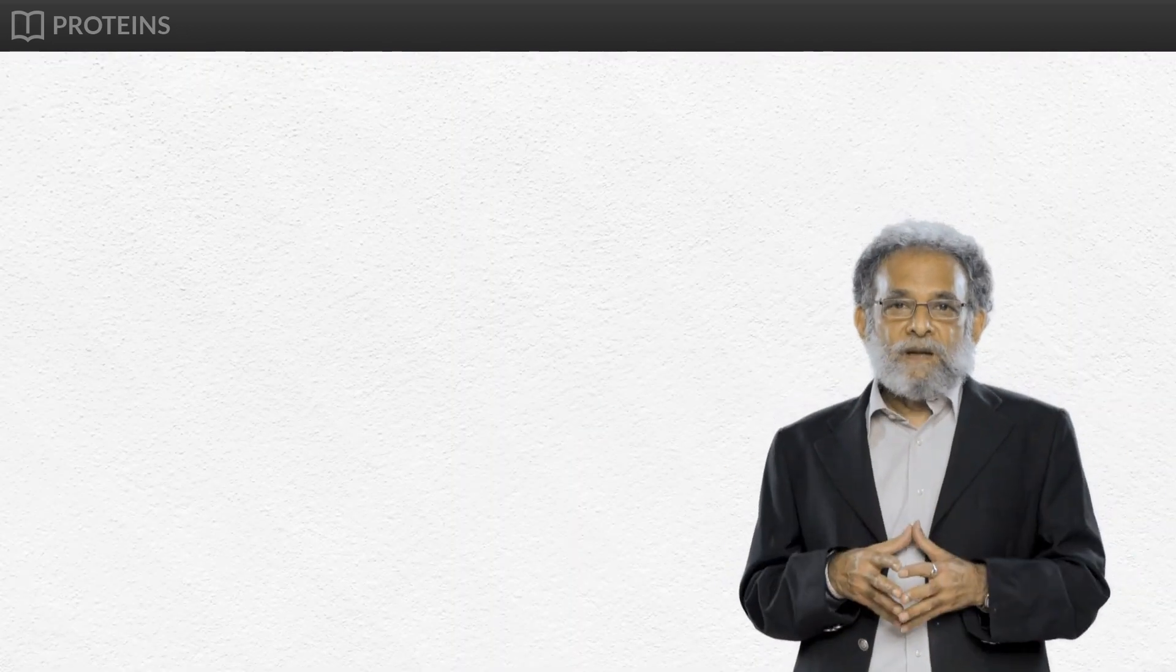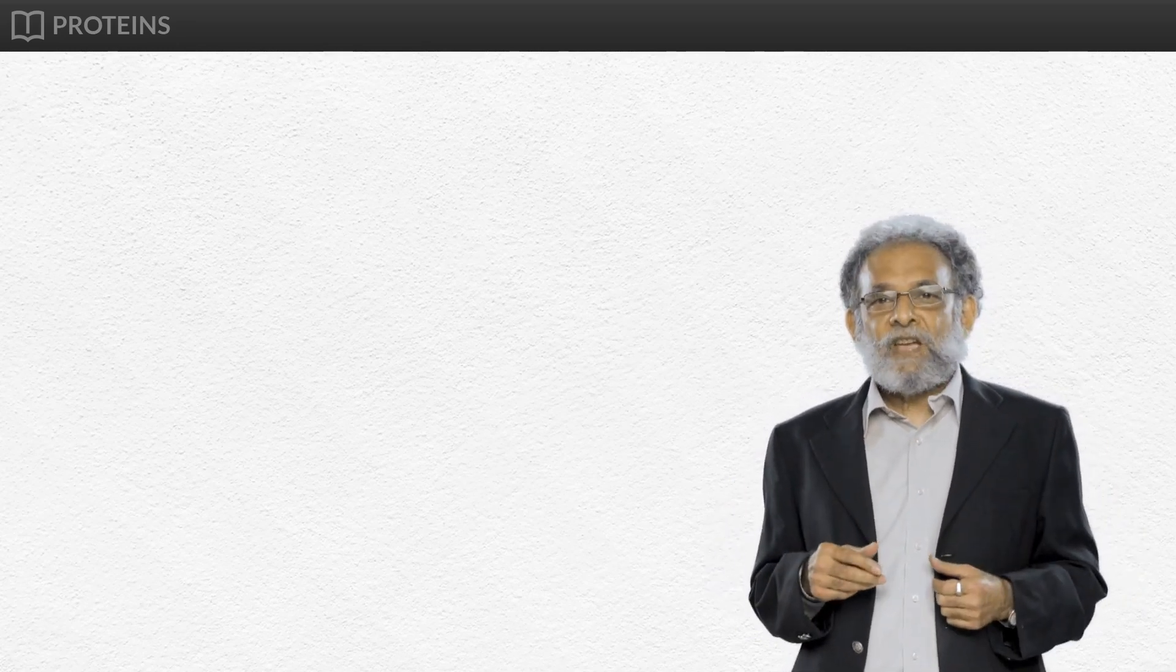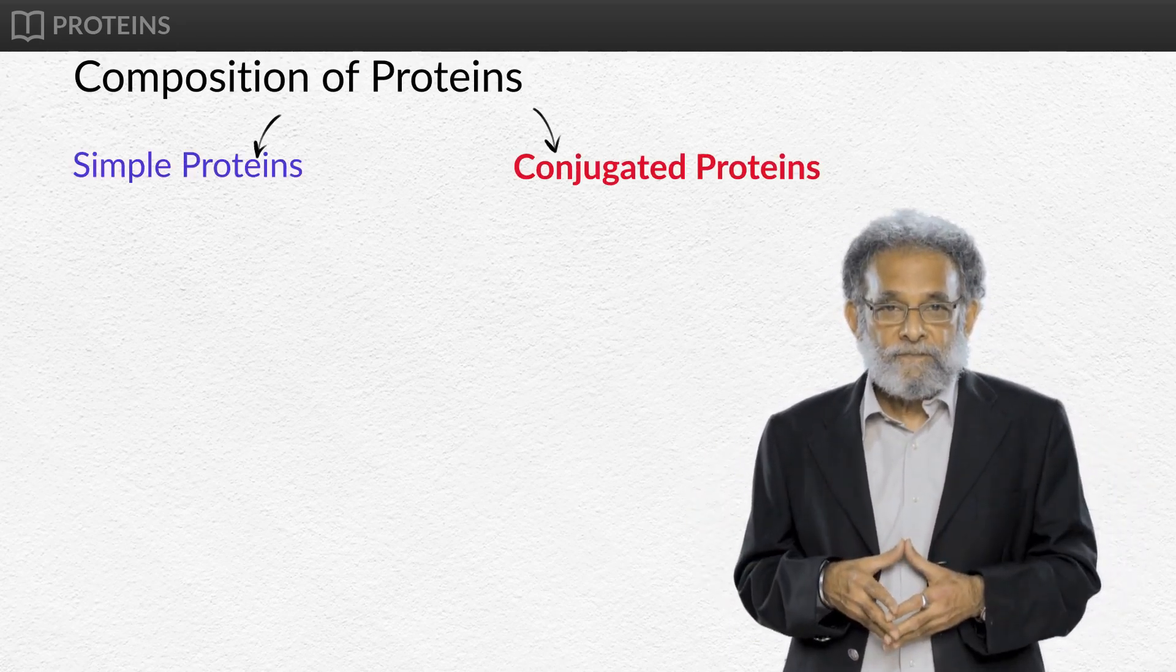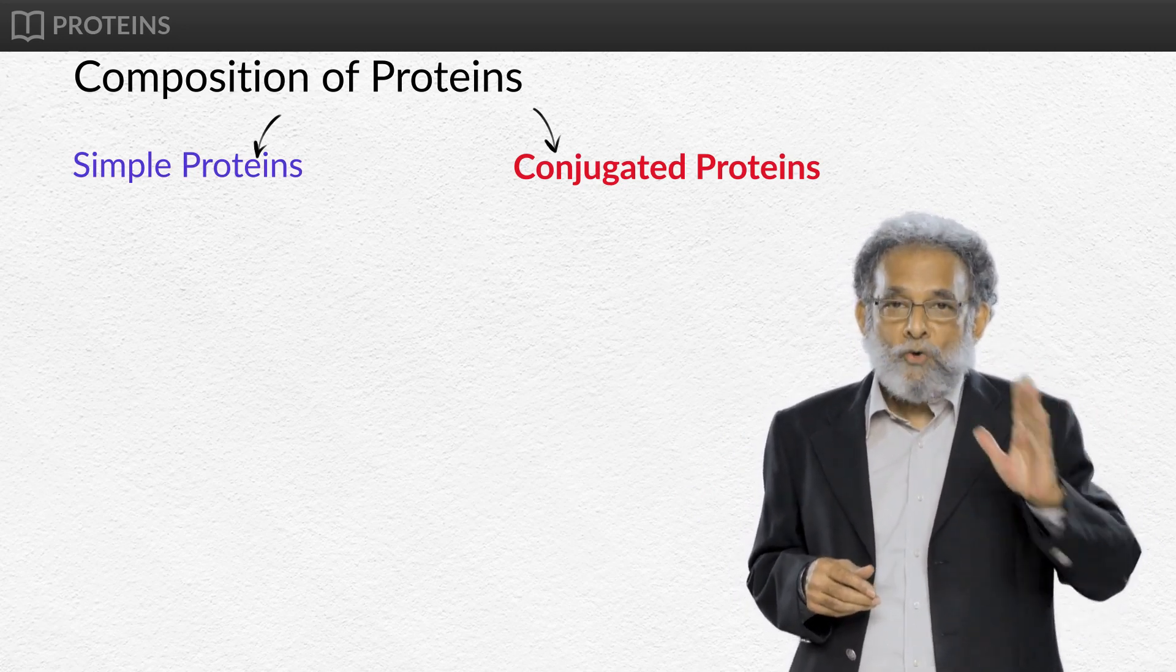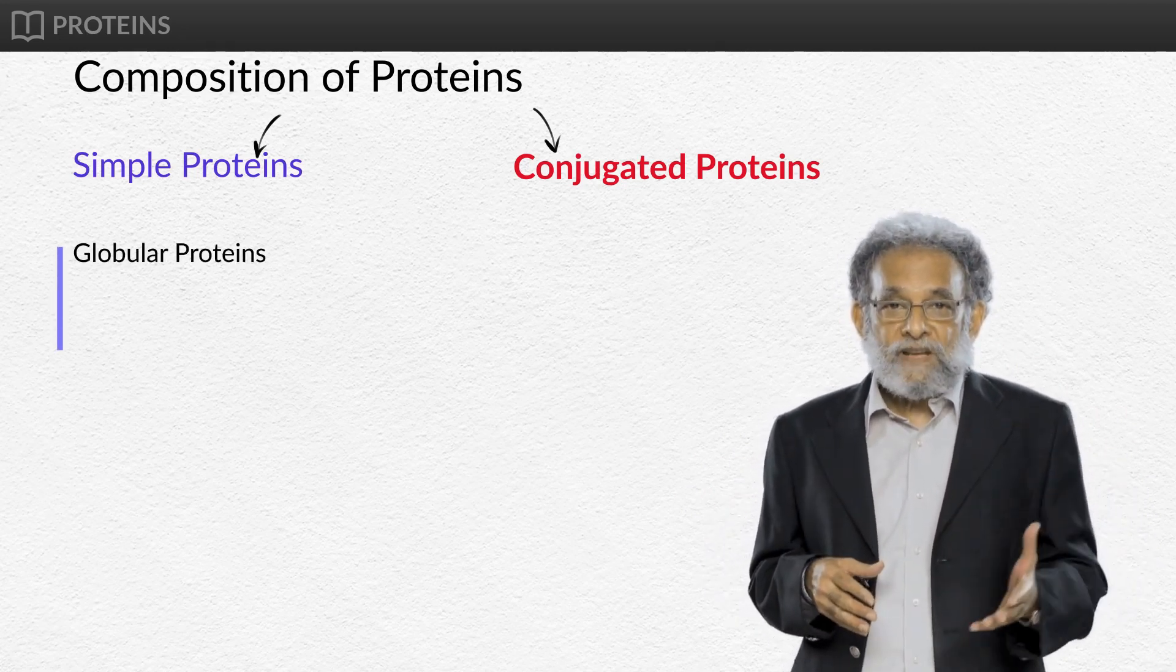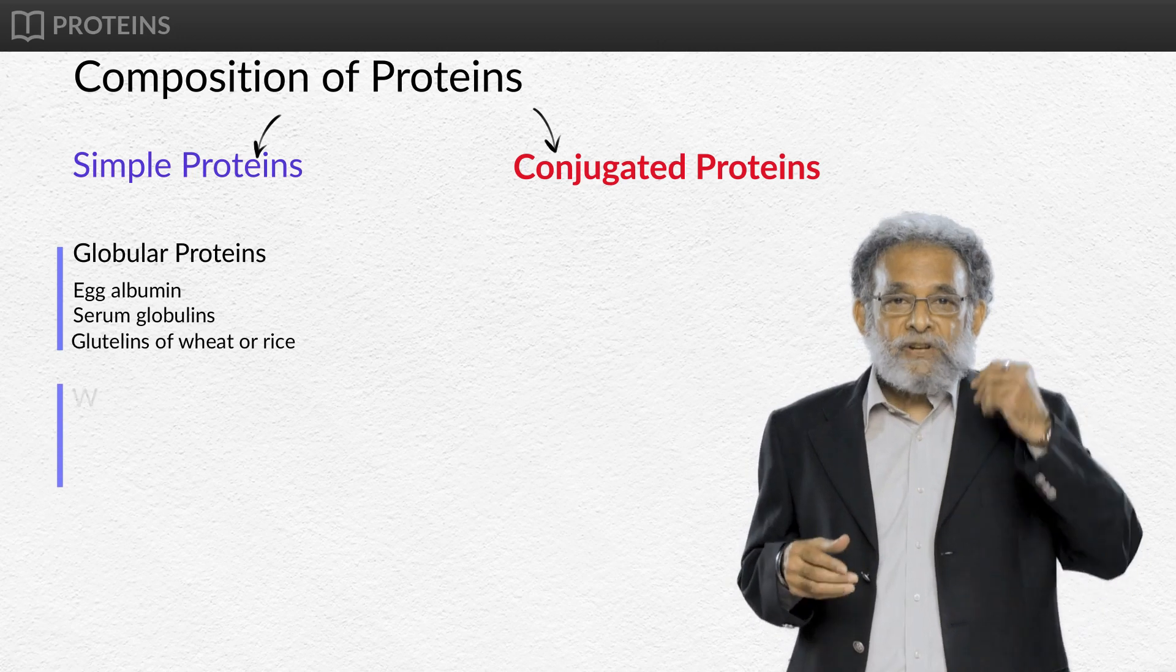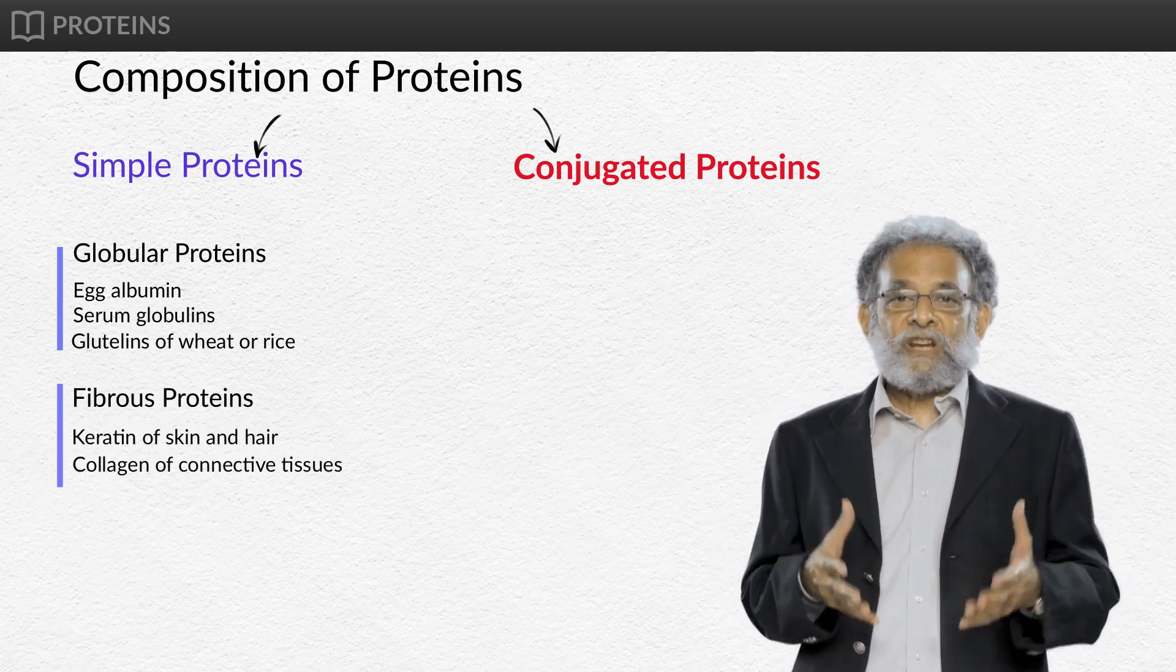By now we have learned about the function and structure of proteins. Let's see the classification of proteins based on their composition into simple and conjugated proteins. Firstly, simple proteins are composed of amino acids only. Examples include large globular proteins such as egg albumin, serum globulin, and glutalins of wheat or rice, and fibrous proteins such as keratin of skin and hair, and collagen of connective tissues.